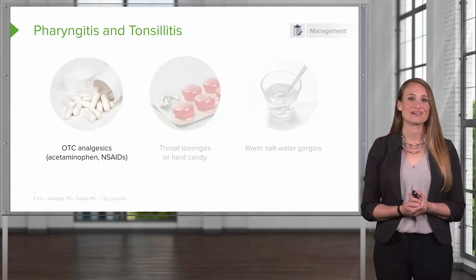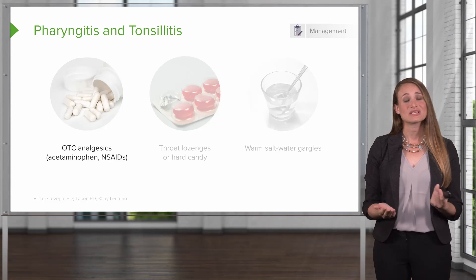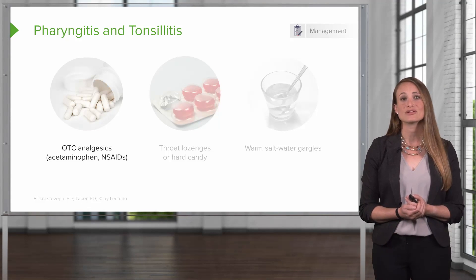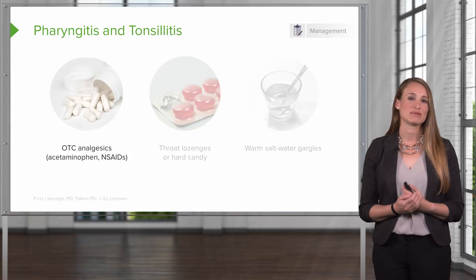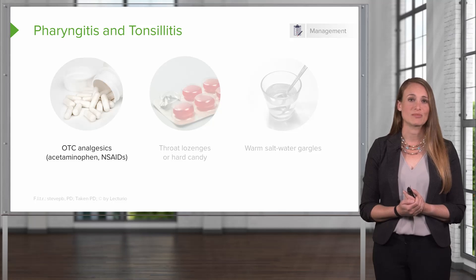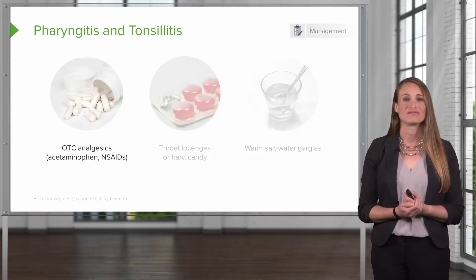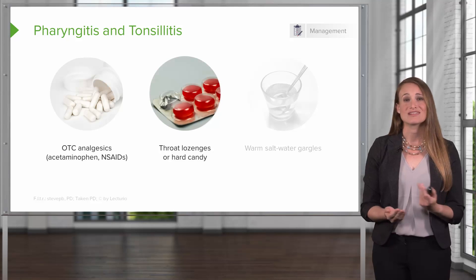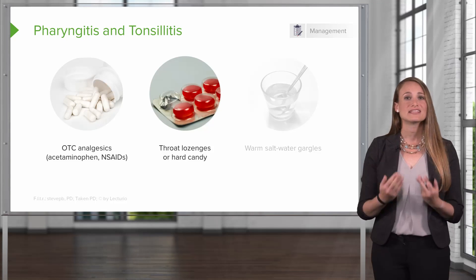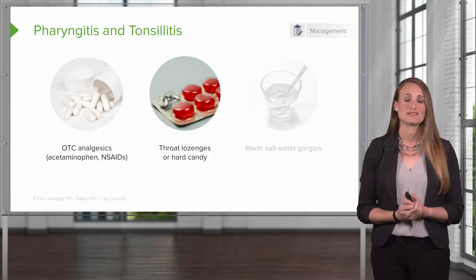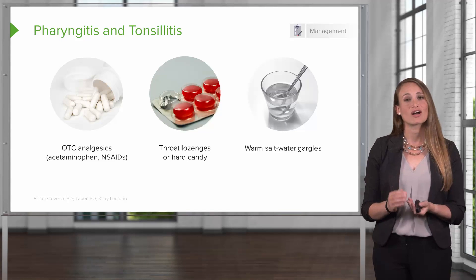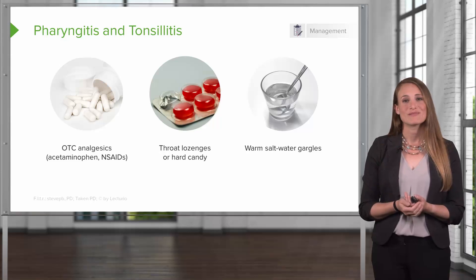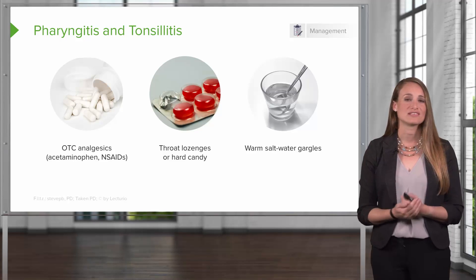So how do we manage pharyngitis and tonsillitis? Sometimes it hurts, so over-the-counter analgesics — this includes acetaminophen or NSAIDs. NSAIDs can provide more relief because they also have anti-inflammatory properties, and a lot of the pain is caused by the inflammation. Patients can also suck on throat lozenges or hard candy to help increase salivary production and wash away some irritation. Patients can also mix up warm salt water and gargle it in their throat — add some salt, stir it up, gargle it in the back of the throat, and spit it out. They can do this as many times as needed.